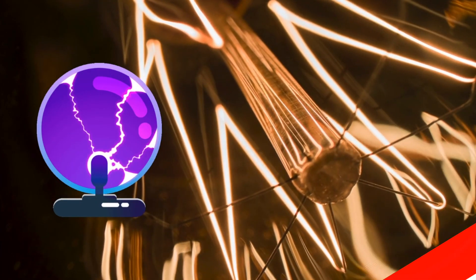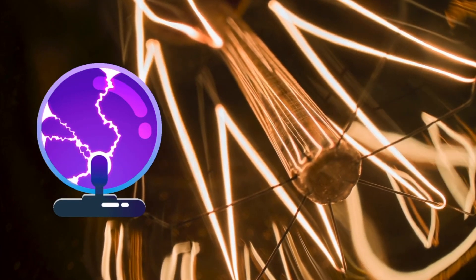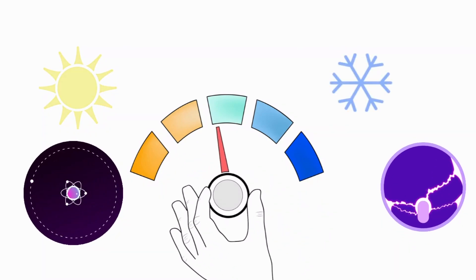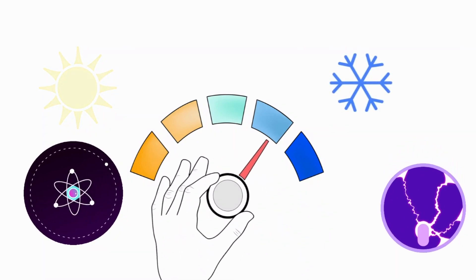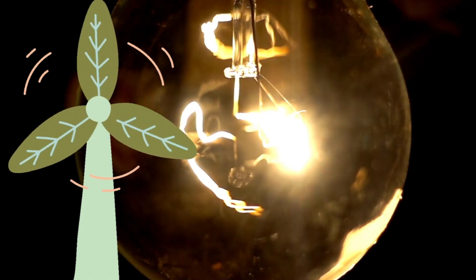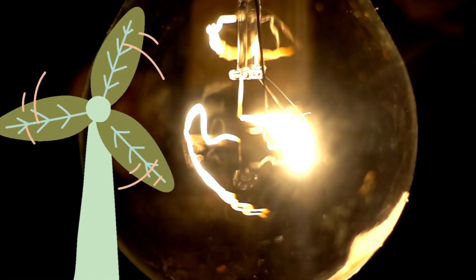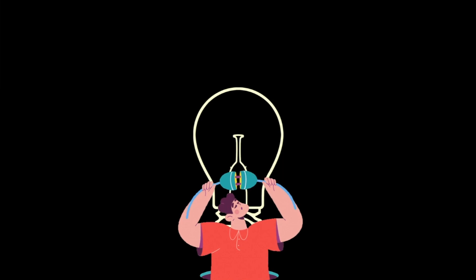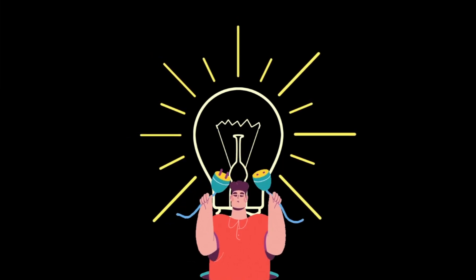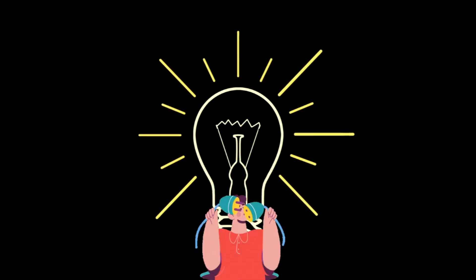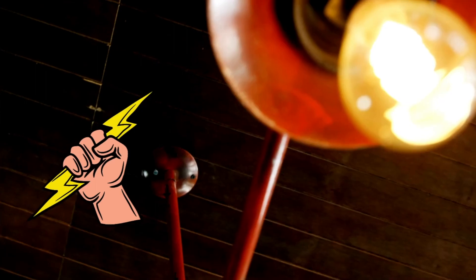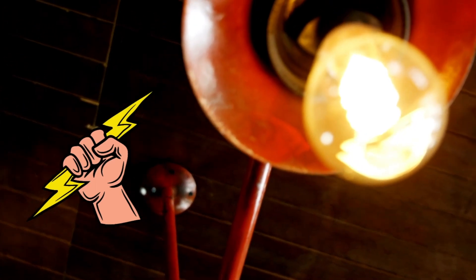When the light bulb is connected to a source of electricity, the electricity can easily travel along the thick wires to the light bulb. But when it reaches the filament with its very thin wire, the electricity has to force its way through, using up a lot of energy, which makes the filament very hot and very bright. The more energy used by the incandescent light, the brighter it will be.